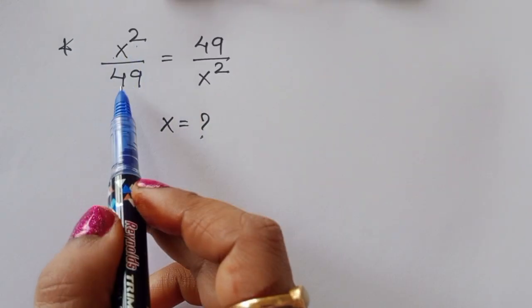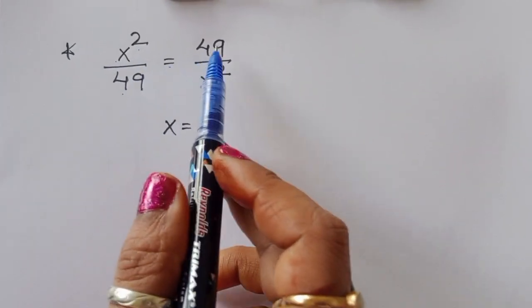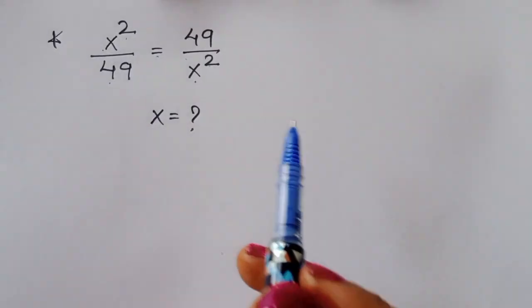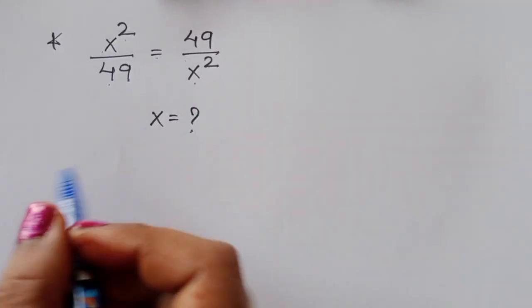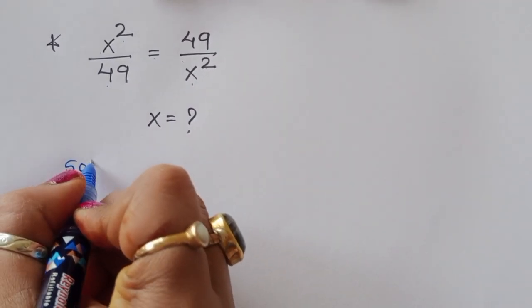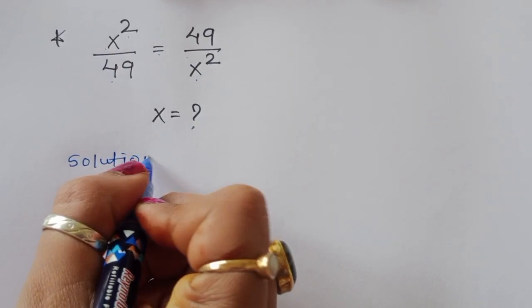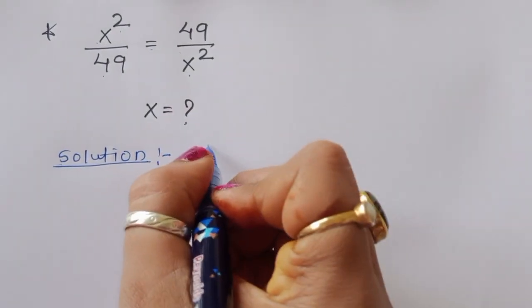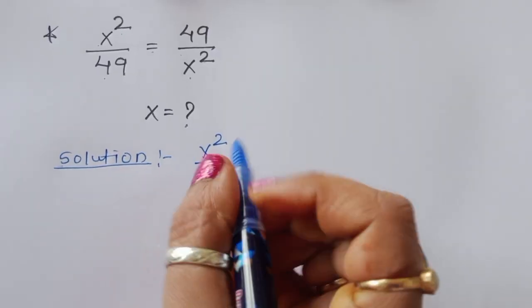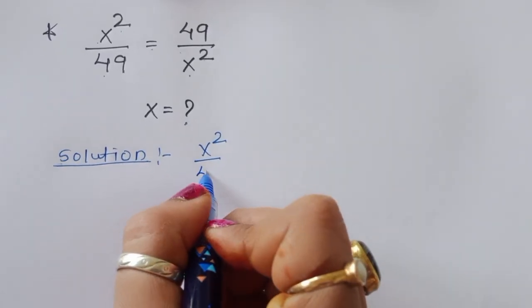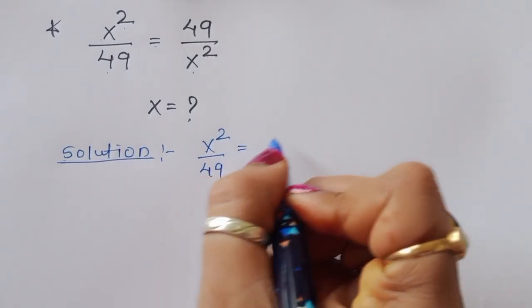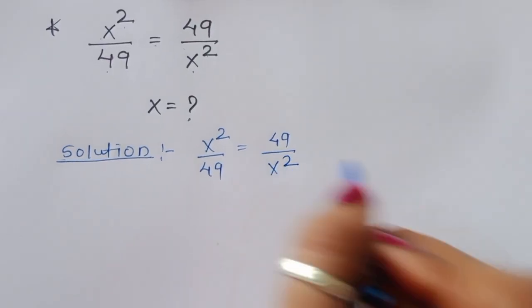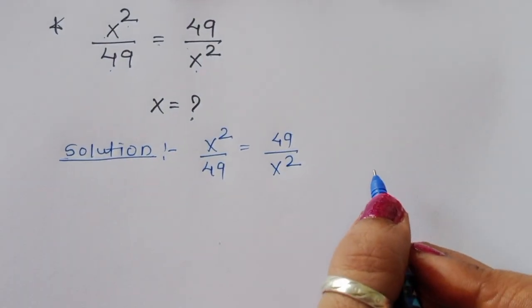The question is: given x² / 49 = 49 / x², we have to find out the value of x. Let's see the solution.